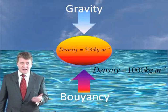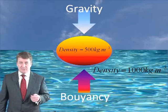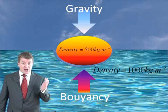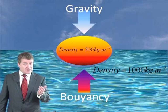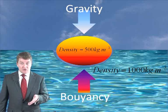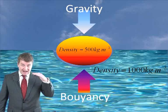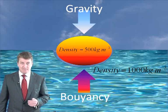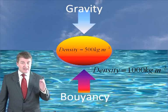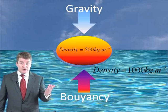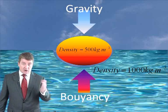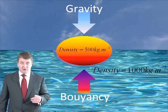This can be demonstrated by looking at this picture. As you can see, the object has a density of 500 kilograms per meter cubed, and this will have a force known as gravity acting down on it. When placed in water, it will experience an upward force known as buoyancy, which is equal and opposite to the force of gravity.